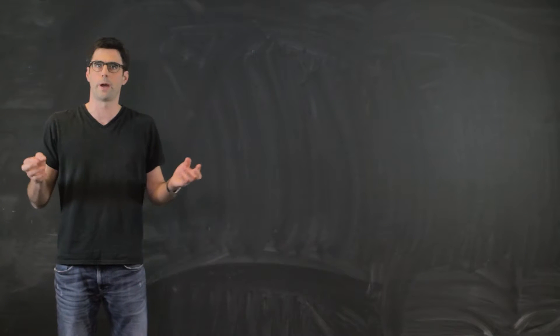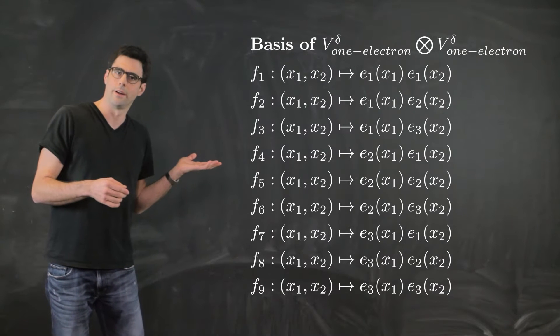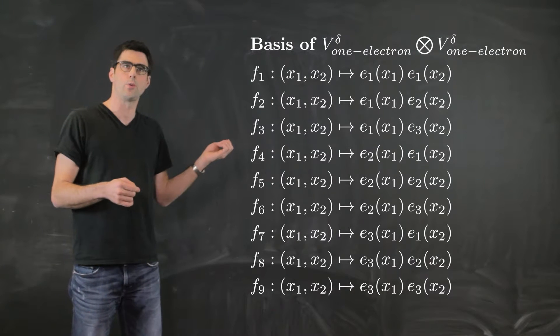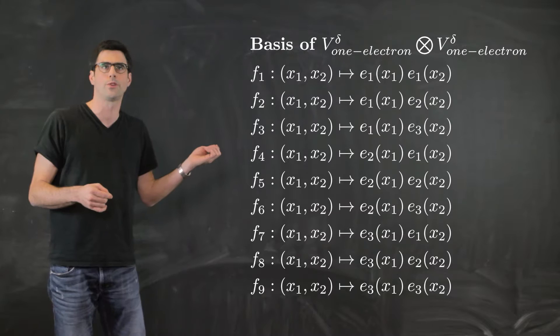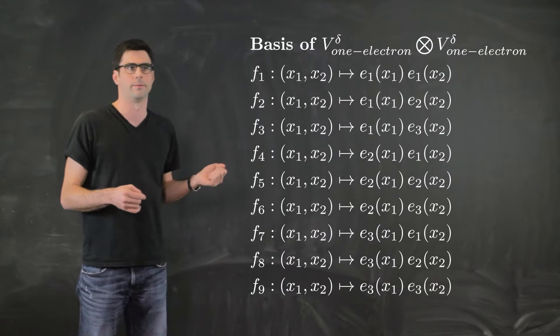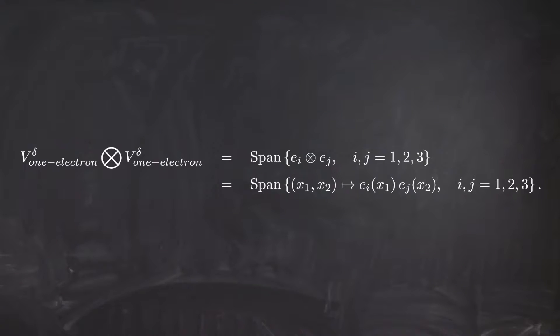The basis functions of the tensor product space are simply products of the basis functions of the one-electron space. Here we have a list of all nine basis functions: F1 maps (X1, X2) onto E1 evaluated at X1 times E1 evaluated at X2, and so on. Hence, the tensor product space is the span of all these basis functions, meaning all linear combinations of these basis functions. This can be rewritten in a more compact form as the span of all tensor products between E_i and E_j. Importantly, this definition of the tensor product space does not depend on the choice of the basis E1, E2, E3.